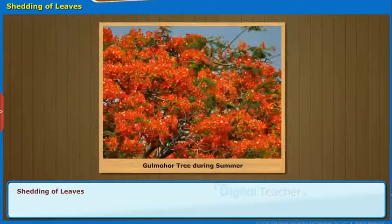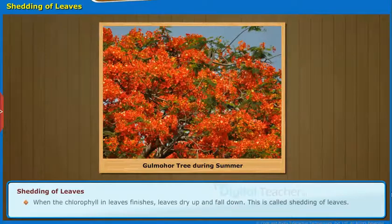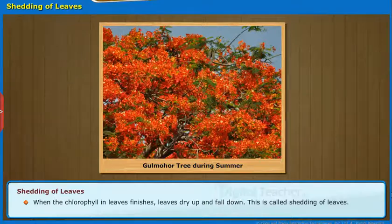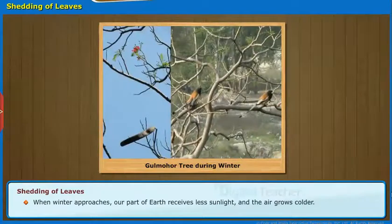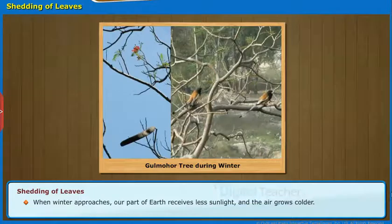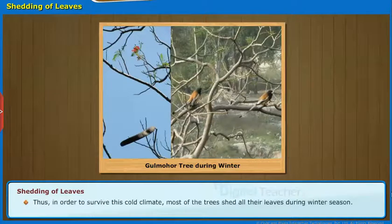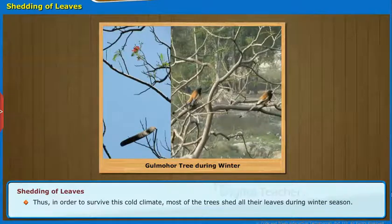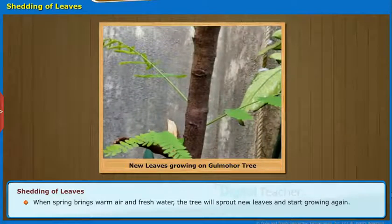Let us know why the leaves of trees fall down. When the chlorophyll in leaves finishes, leaves dry up and fall down. This is called shedding of leaves. When winter approaches, our part of earth receives less sunlight and the air grows colder. Thus, in order to survive this cold climate, most of the trees shed all their leaves during winter season. When spring brings warm air and fresh water, the tree will sprout new leaves and start growing again.